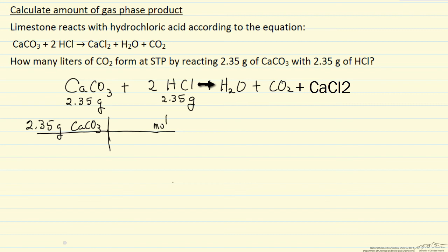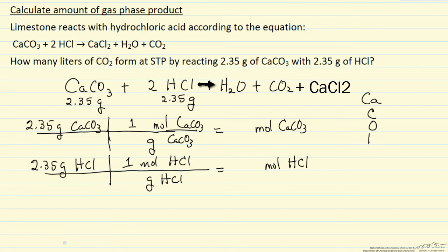So we need the number of moles per gram, or the number of grams per mole, for one mole, how many grams of calcium carbonate. Of course we need the molecular weight, so we're going to need to look up calcium, carbon, and oxygen molecular weights. And then for HCl, we also have 2.35 grams, and we're going to do the exact same type calculation. And that means we need to look up now the atomic masses of hydrogen and chlorine.